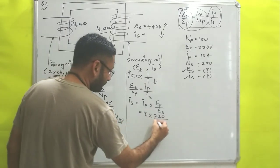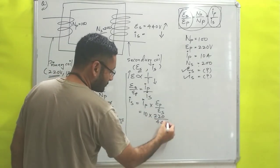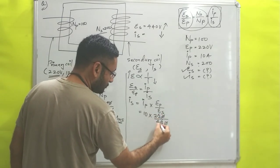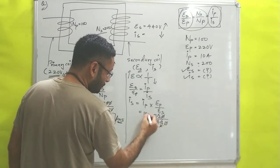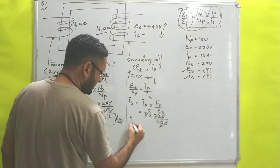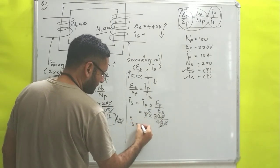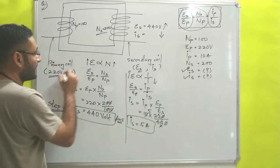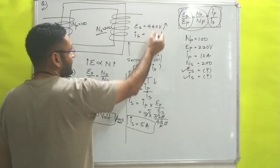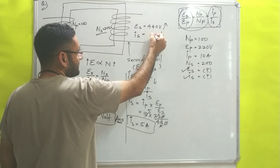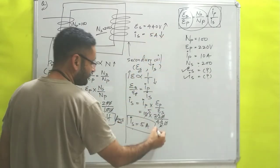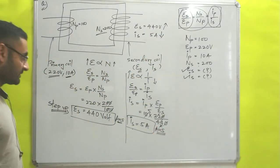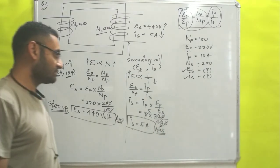Simplifying: 220 / 440 cancels to give 1/2, so IS = 10 × (1/2) = 5 amperes. The current on the secondary side is 5 amperes — the potential increased so the current decreased. You can take a screenshot of this.